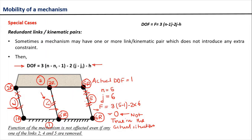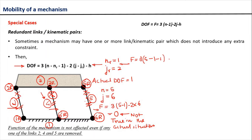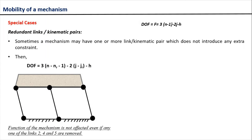Let's say link 4 is our redundant link. As soon as we remove this redundant link, Nr becomes equal to 1 and Jr becomes equal to 2, since we are removing one redundant link and at the same time removing 2 kinematic pairs. Applying the modified formula: F equals 3(N minus Nr minus 1) minus 2(J minus Jr), so 3(5 minus 1 minus 1) minus 2(6 minus 2) equals 3 times 3 minus 2 times 4, which gives us the actual degree of freedom equal to 1.